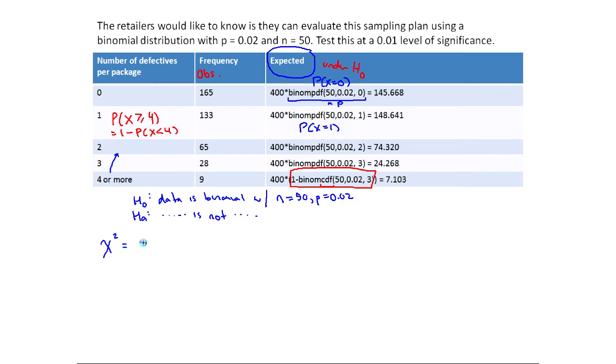165 minus 145.668 squared divided by 145.668. And so we're going to keep adding these for each pairing.